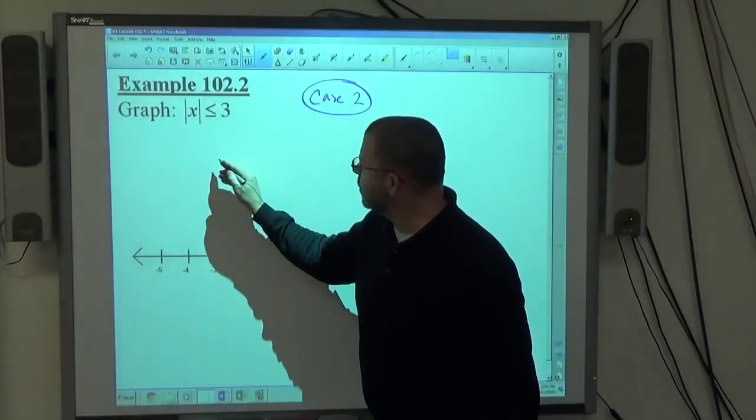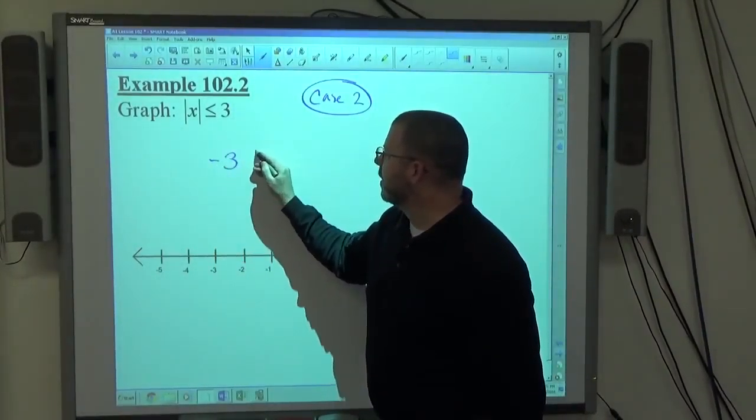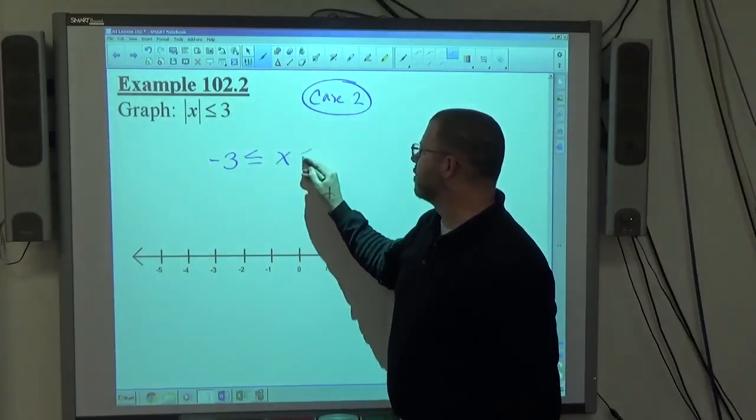Once I establish this case 2, I'm going to translate it from its current absolute value structure into a non-absolute value structure. Case 2's translation is the opposite of the number, less than or equal to X, less than or equal to the number.